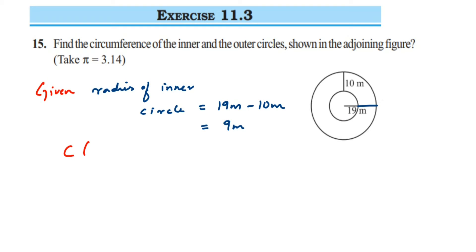Circumference of the inner circle is equal to 2πr. So 2 into pi value is 3.14 multiplied by radius here is 9. So 2 times 9 is 18, 18 into 3.14 when you multiply these two will get 56.52. So 56.52 meters.